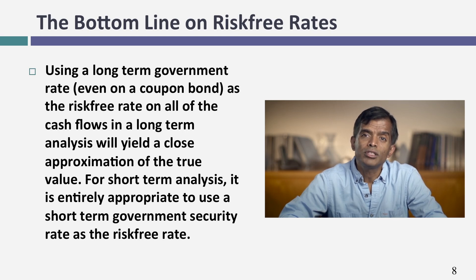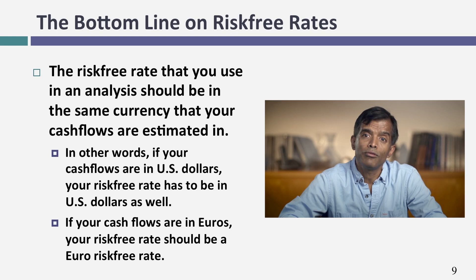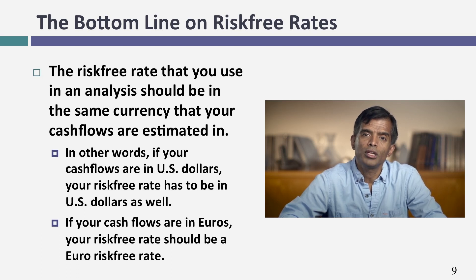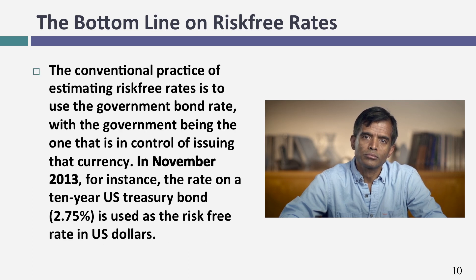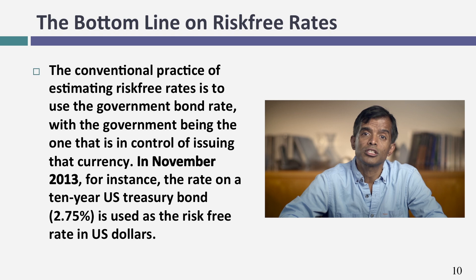In much of corporate finance and valuation, you can assume that a 10-year maturity, zero-coupon, default-free bond will effectively be a pretty good risk-free rate. So find a default-free 10-year bond and you've got a risk-free rate in that currency. In November of 2013, I needed a U.S. dollar risk-free rate. I assumed — and this was not an easy assumption as it might have been five or ten years ago — that the U.S. Treasury was still default-free, and I used the U.S. 10-year T-bond as my risk-free rate.